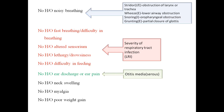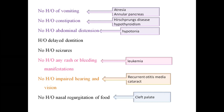Down syndrome children are prone for recurrent ear canal infections, mainly serous otitis media. Ask about ear discharge or ear pain, neck swelling to rule out lymphadenopathy, myalgia in viral infections, and poor weight gain. If the child has associated cardiac problems or recurrent respiratory tract infections, weight gain may be affected. Down syndrome is mostly associated with obesity, but with severe underlying cardiac disease, the child may not gain weight. Regarding gastrointestinal system, ask about vomiting to rule out atresia in the GI tract, annular pancreas.